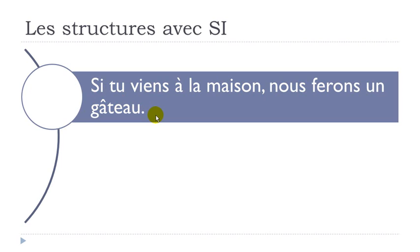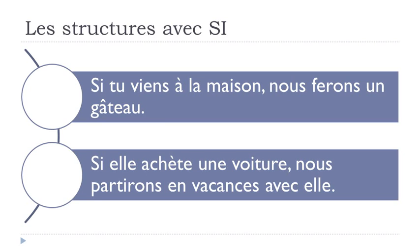So that first construction is SI TU VIENS À LA MAISON — it's a possibility — NOUS FERONS UN GÂTEAU. Second example: SI ELLE ACHÈTE UNE VOITURE — ACHETER is 'to buy,' UNE VOITURE is 'a car' — NOUS PARTIRONS EN VACANCES AVEC ELLE. PARTIR means 'to leave,' and you've got the future form: we will leave on holiday with her. So here you see: present form followed by future form. Remember: SI plus PRESENT, then the FUTURE.